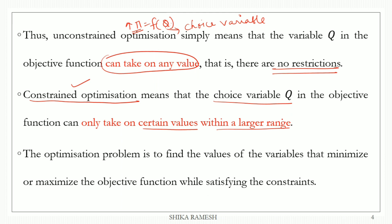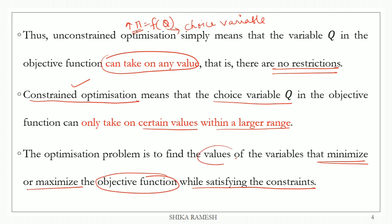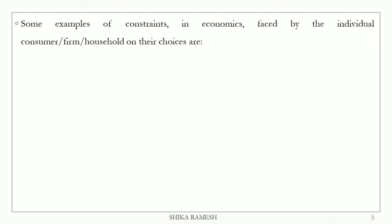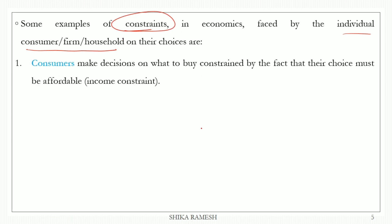If you want to state one optimization problem, the constraints must be satisfied. One objective function is to maximize or minimize over variables and values. In economics, an individual consumer, individual firm, or individual household will have constraints. Consumers make decisions based on their income constraints.